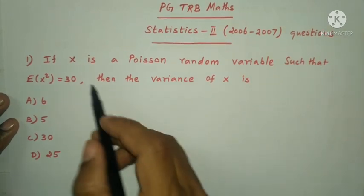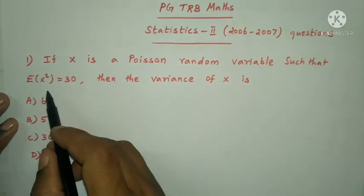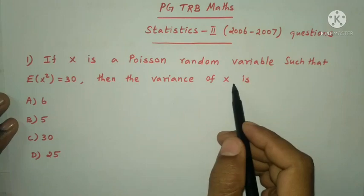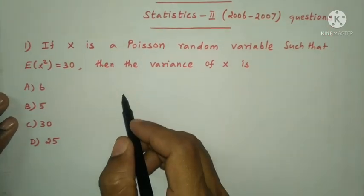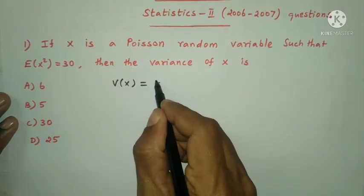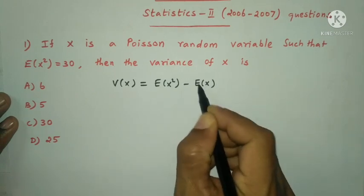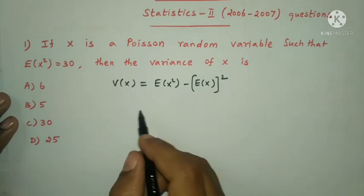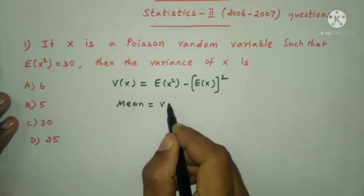First question: if X is a Poisson random variable such that E(X²) = 30, then the variance of X is. The variance formula: V(X) = E(X²) minus E(X) whole square. But in Poisson distribution, mean equals variance.